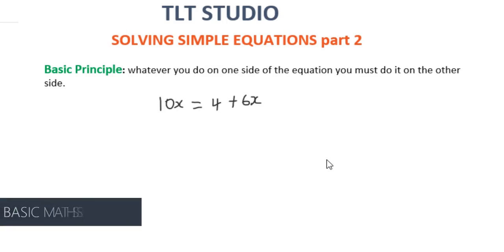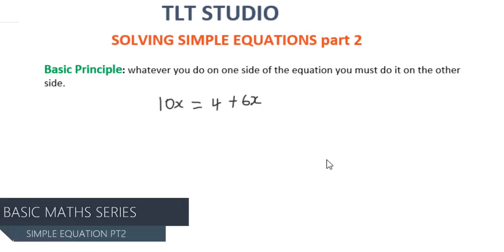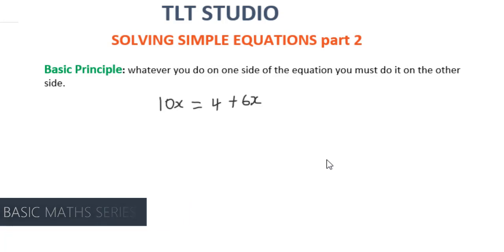Let's jump right in. Now we have this equation here, 10x equals 4 plus 6x. Now when you have an equation like this, the first thing you want to do is to get all like terms on one side of the equal sign.